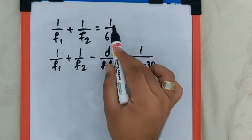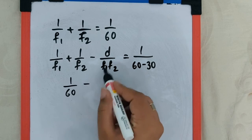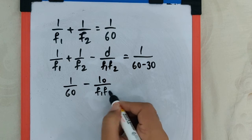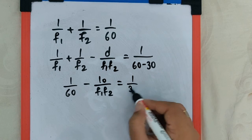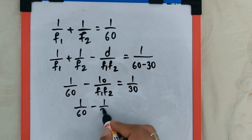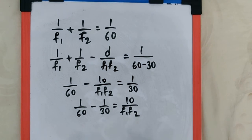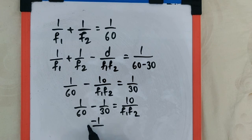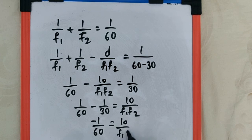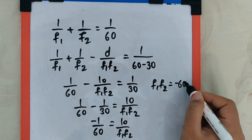First, we substitute 1/60 into the equation. We get 1/60 − 10/(f1·f2) = 1/30. Taking 1/60 to the other side gives 1/60 − 1/30 = 10/(f1·f2). Simplifying, this gives −1/60 = 10/(f1·f2), which means f1·f2 = −600.